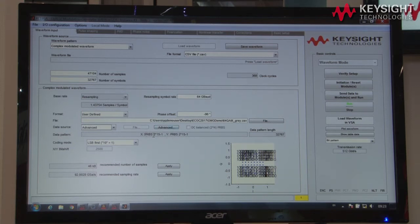So right now I'm generating a PRBS 15 on X and another PRBS 15 on the Y polarization. Down on the right-hand side we see a constellation diagram which is quite crowded right now, but this gives us an overview on what kind of modulation scheme we would expect.